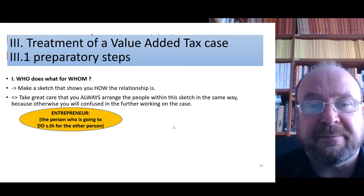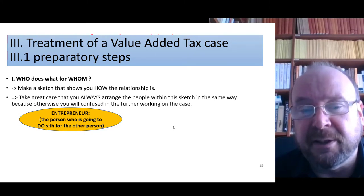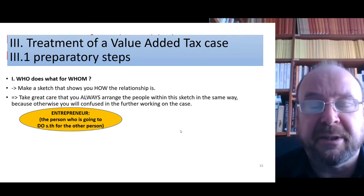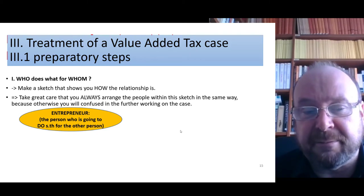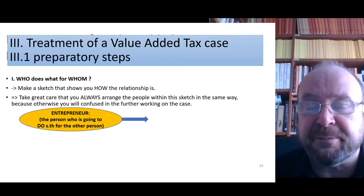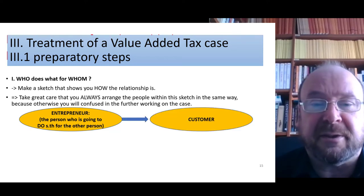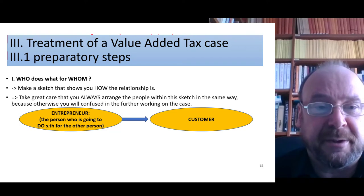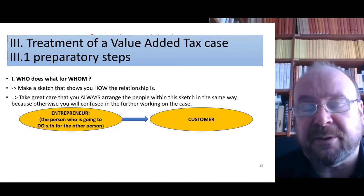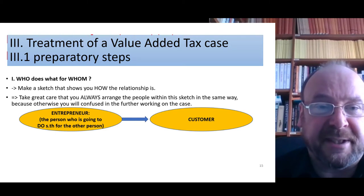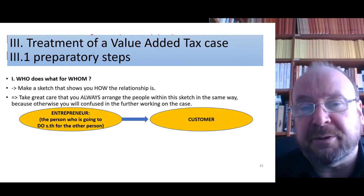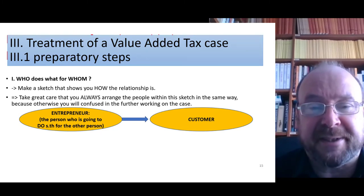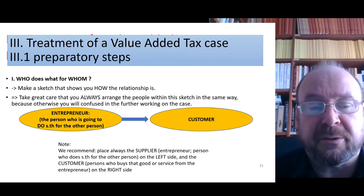Otherwise you would have to read the description of the case a second and third time, which would be a waste of time. The entrepreneur — the person who is going to do something for the other person — should be on the left, and the customer on the right. There is no particular reason for this arrangement; you could also swap them. But under all circumstances, you should do your sketch always in the same way, because otherwise you will be confused.